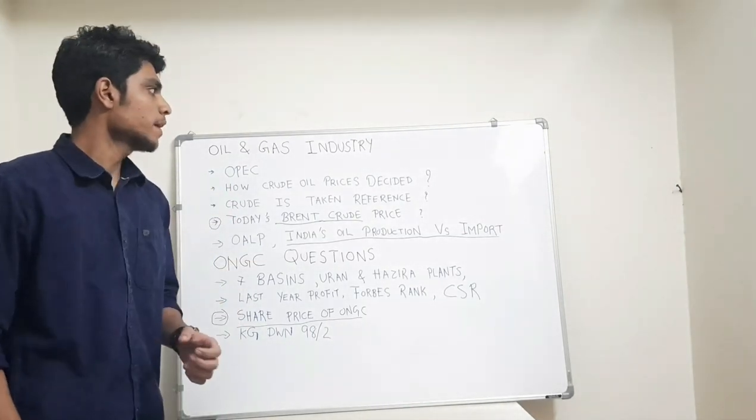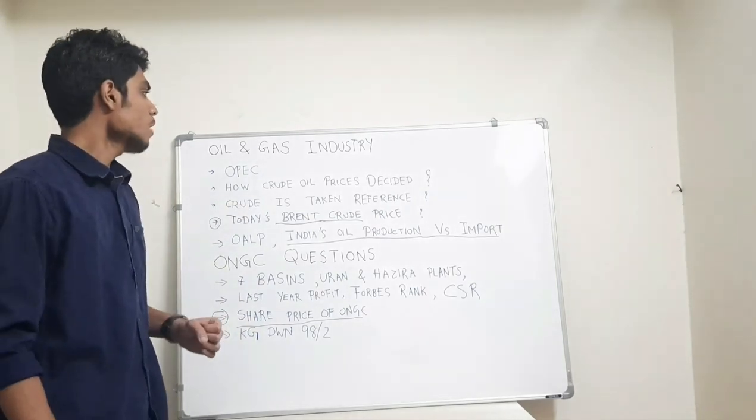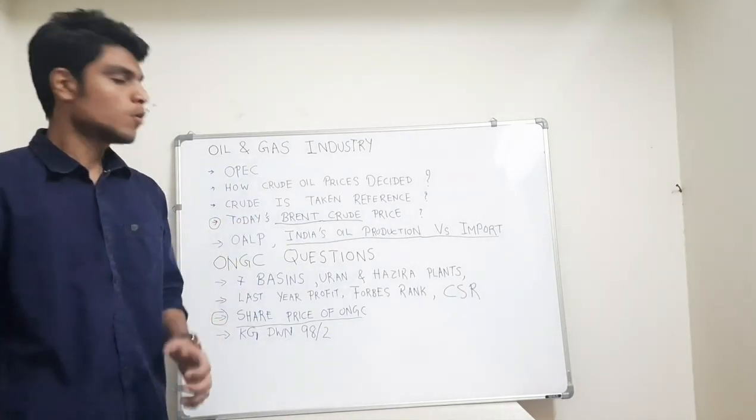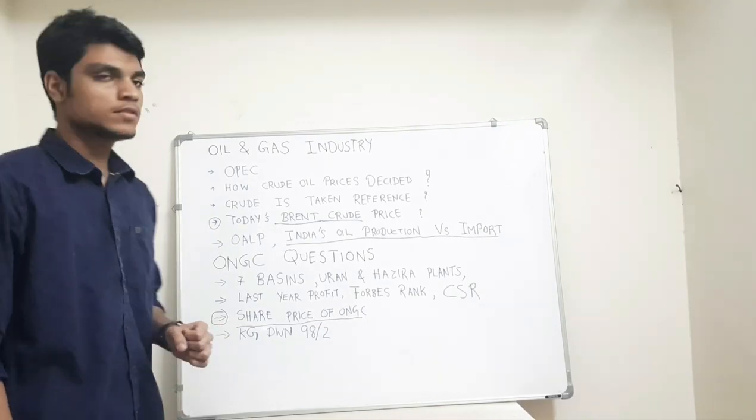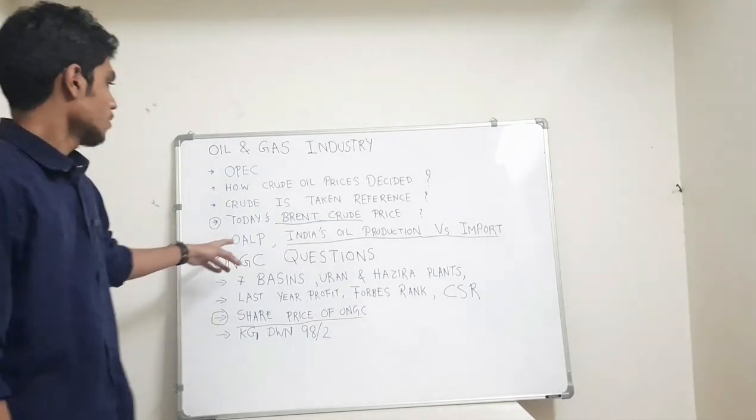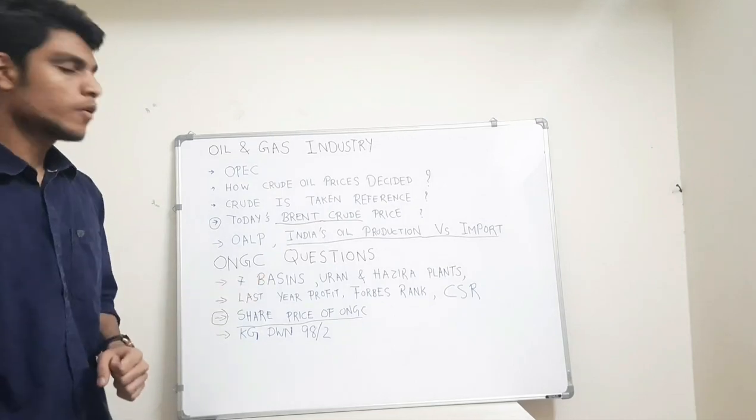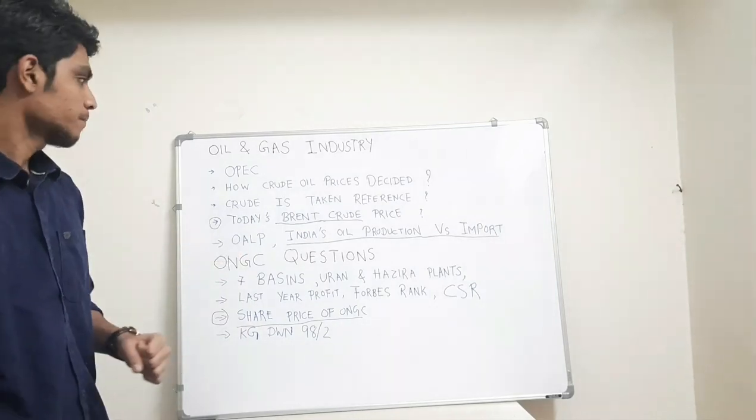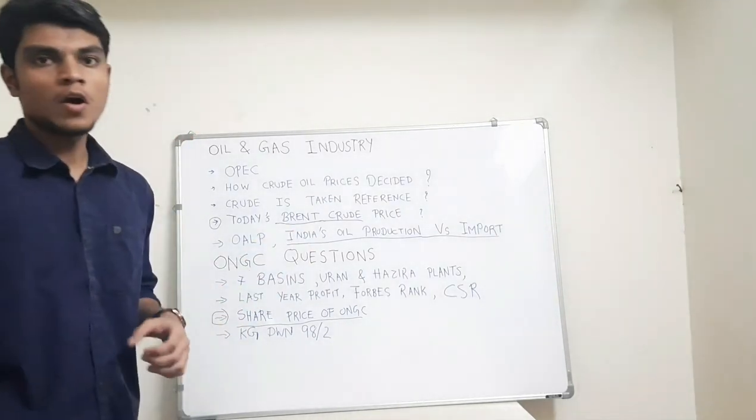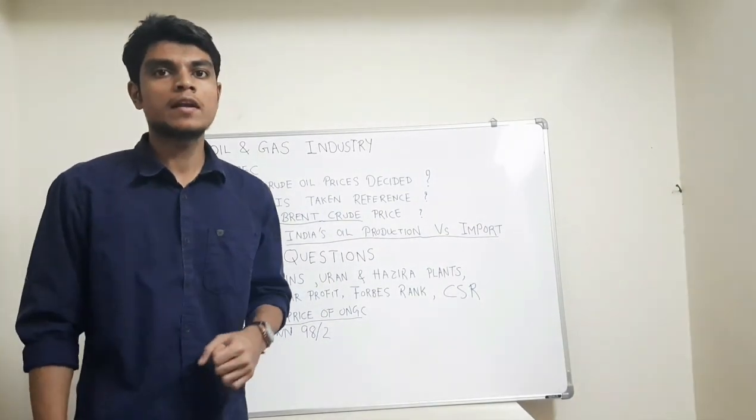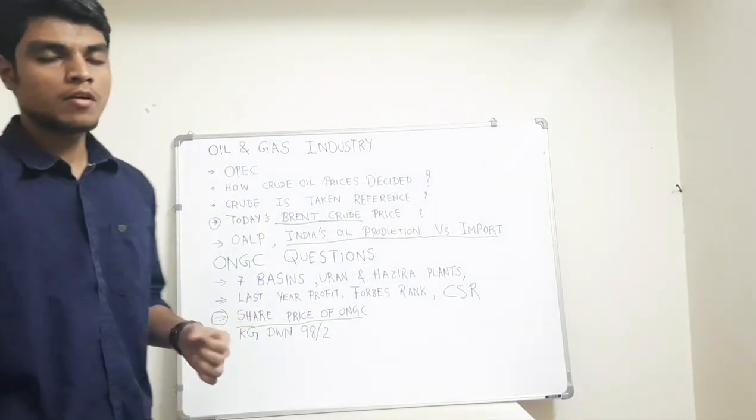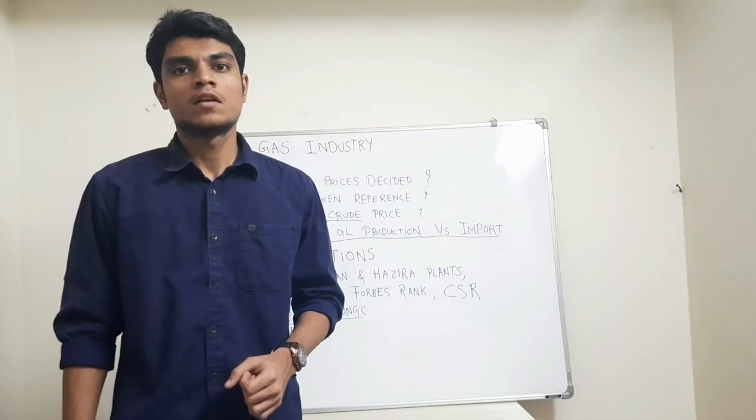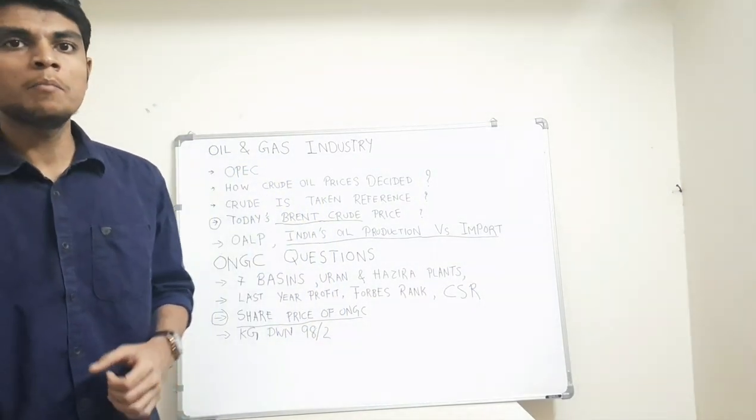Second, how crude oil prices are decided? Third, which crude oil is taken as reference in the world? Today's Brent crude oil price. Brent crude is taken as reference for crude oil prices. What is OALP? In India for allocating oil blocks, it is a policy decided by the government of India. What was last year's India's oil production and how much India imported last year? Apart from this friends, you please refer the current oil and gas news on Google. So it will be also a plus point to you.